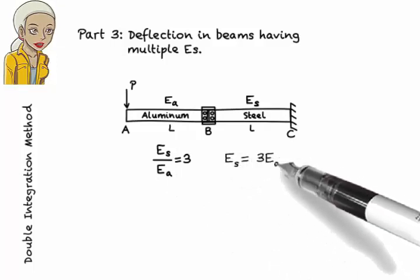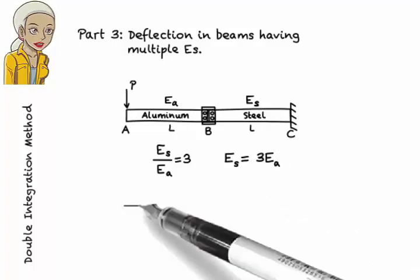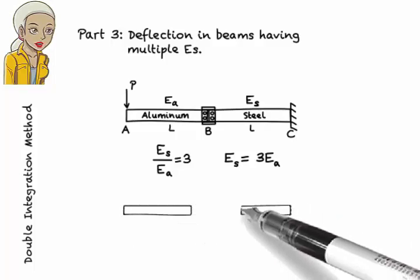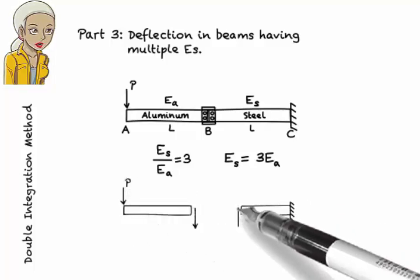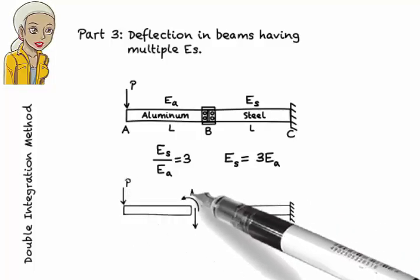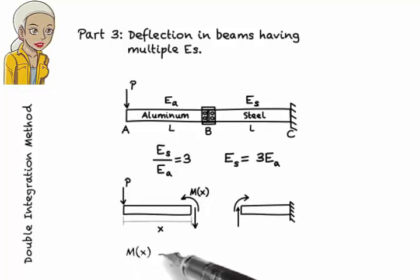Both segments have the same cross-section, therefore moment of inertia I remains constant for the entire beam. Since the beam is subjected to a concentrated load of P at point A, we can write the bending moment equation as M(x) equals negative Px.